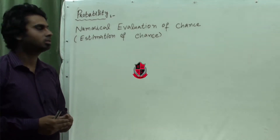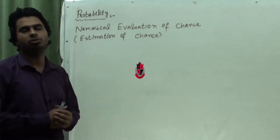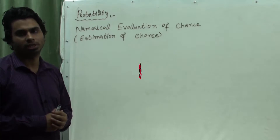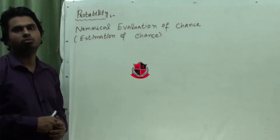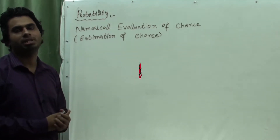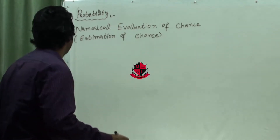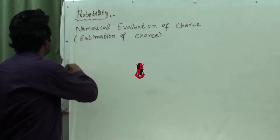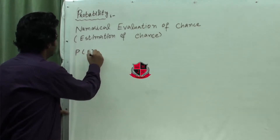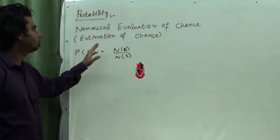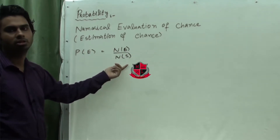What is probability? Basically, probability is the numerical evaluation of chance, or we can say it is just the estimation of a chance. We will apply mathematical tools to estimate a chance. So the mathematical definition of the probability of an event is: number of elements in an event divided by the number of elements in the sample space.